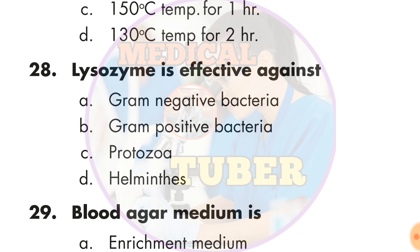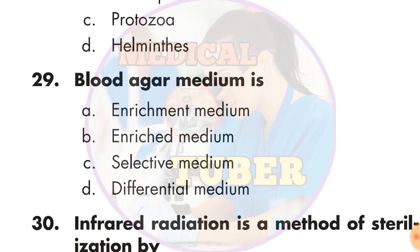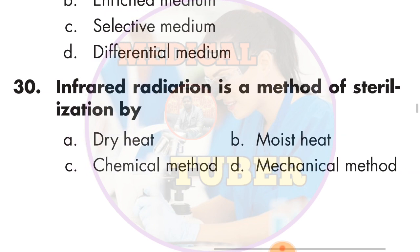Question number 28: Lysozyme is effective against — the answer is B — gram-positive bacteria. Question number 29: Blood agar medium is — the answer is B — enriched medium.